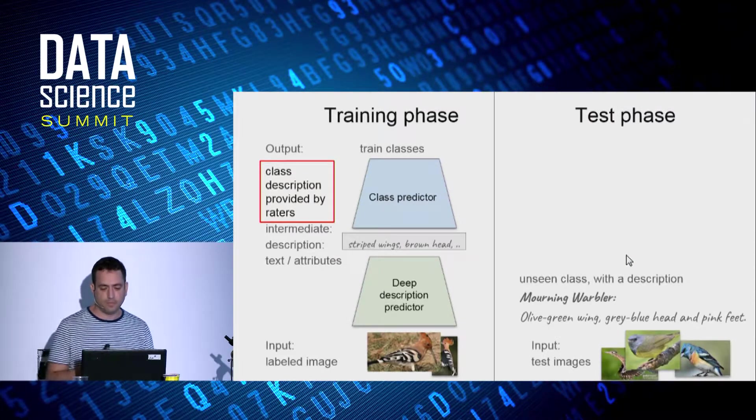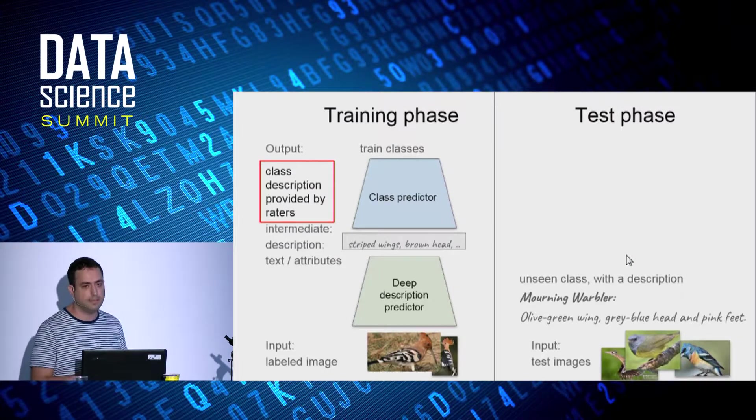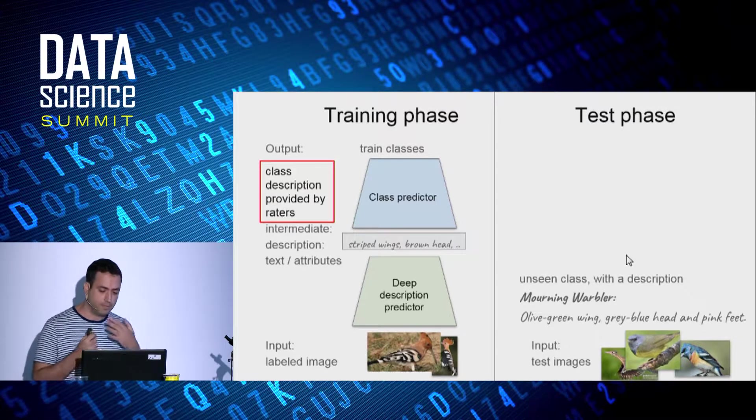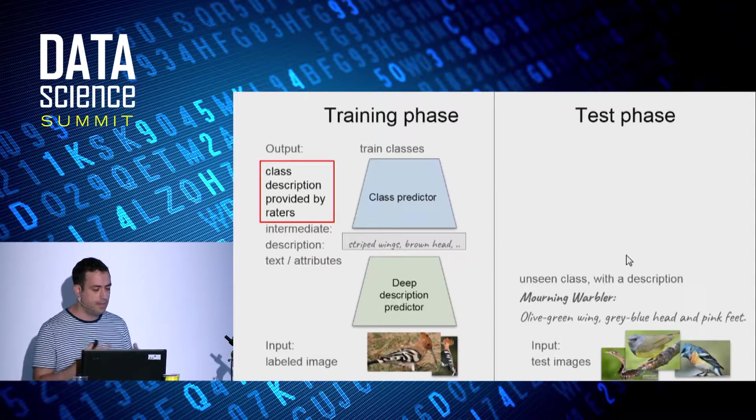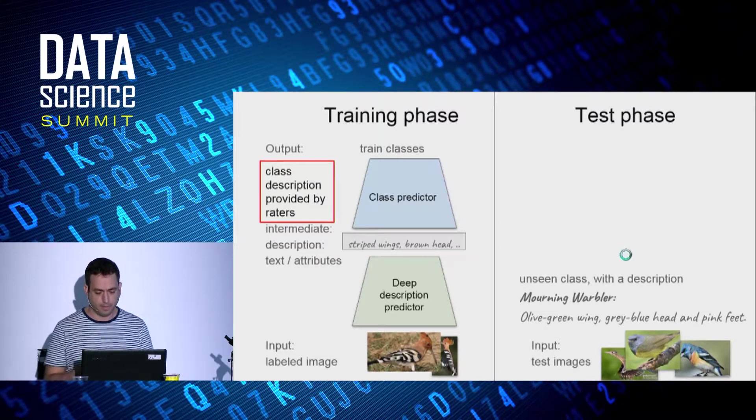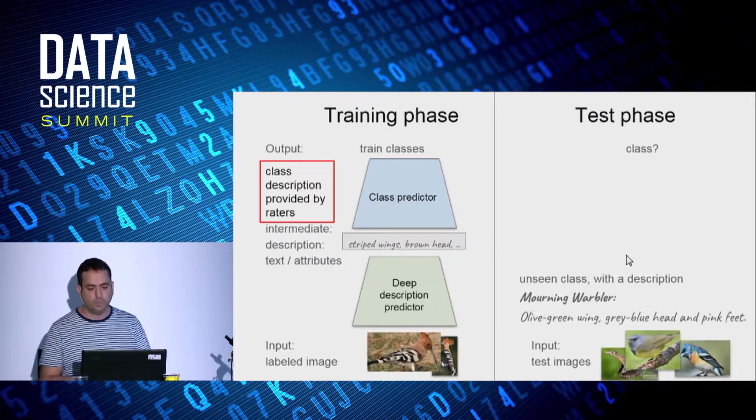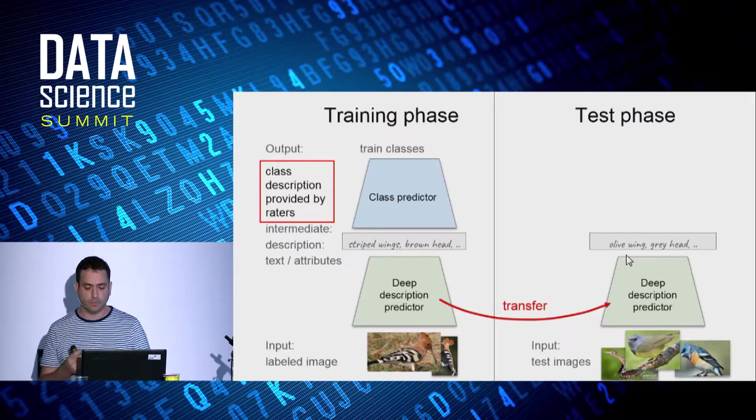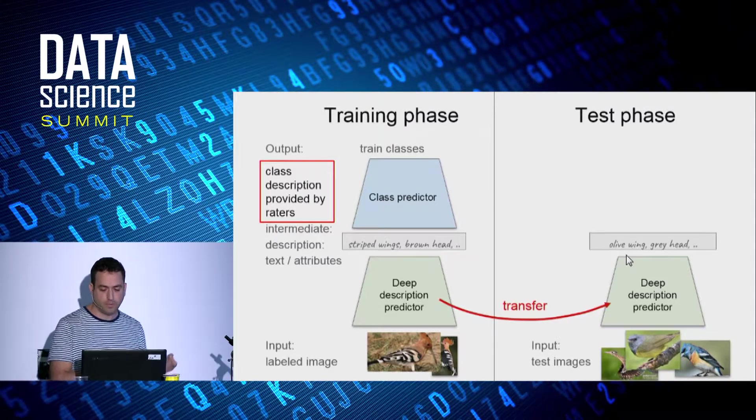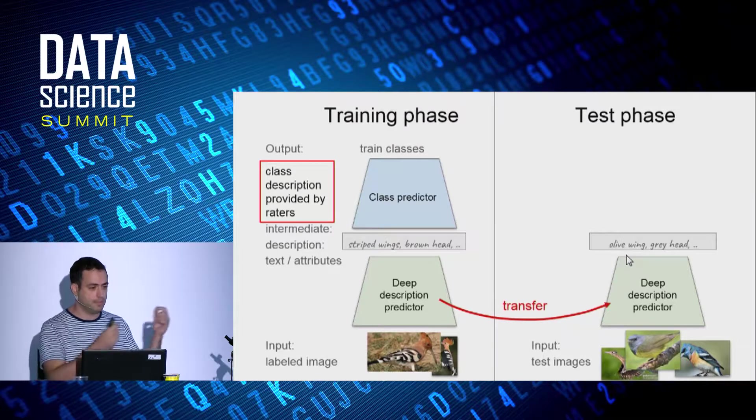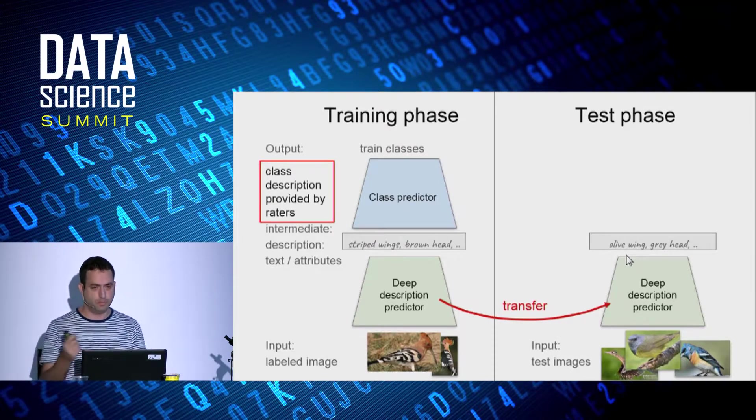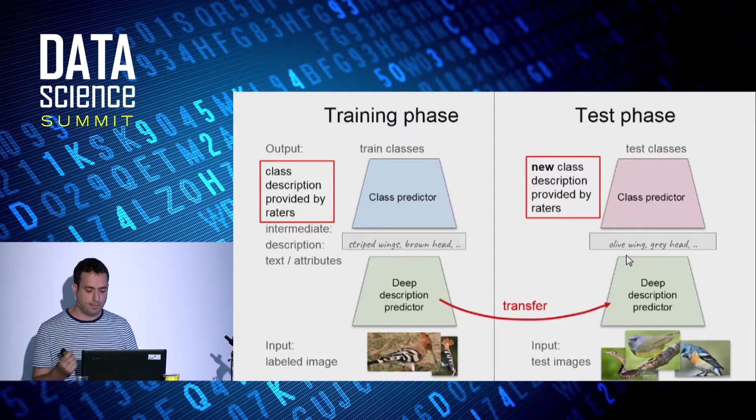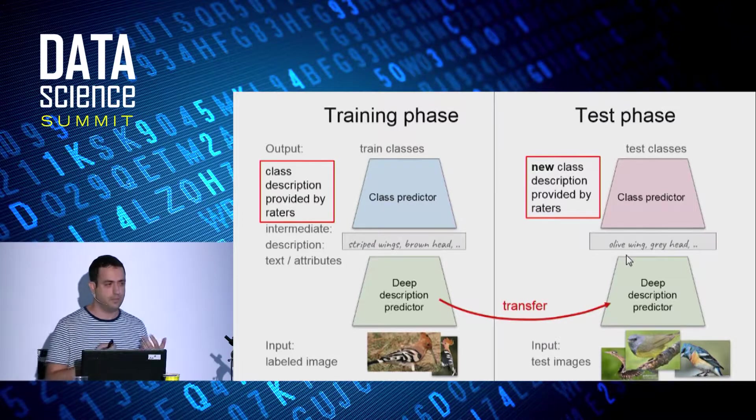On test time, we get a set of image samples from unseen classes. Each class comes with a semantic description. For example, a mourning warbler has olive green wing, gray blue head, and pink feet. Our goal is to predict the class for each image sample. And for that, we transfer the network that maps images to intermediate description. So we just take the network we trained on and move it to the test space. Then we map the predicted description to test classes using the new class descriptions given by raters.